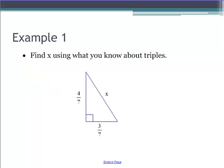Find X using what we know about triples. Well, here's a three, here's a four—that means I need a five. The three divided by seven, four divided by seven, five divided by seven. Done. Didn't have to do Pythagorean theorem and didn't have to use fractions.